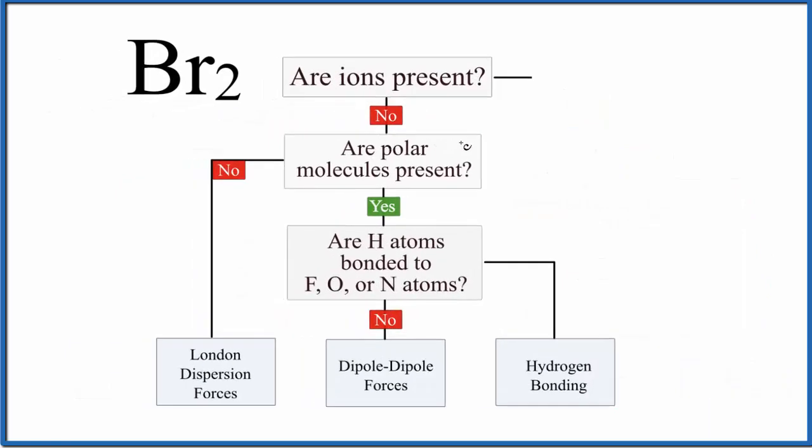Our next question is, do we have any polar molecules present? Well, polarity, we're looking at a difference in electronegativity between the atoms in the molecule. Since we have two bromine atoms, they're the same. There is no polarity. This is a nonpolar molecule.